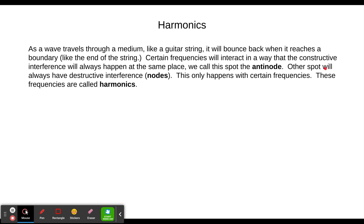Other spots will always have destructive interference. In other words, as the waves bounce back and forth, there'll be a spot that doesn't move. Like if you spin a jump rope twice as fast, you get that spot in the middle where the rope isn't moving, but you have these two little anti-nodes spinning around. This only happens with certain frequencies. These frequencies are called harmonics.